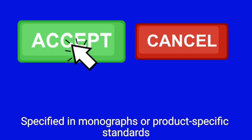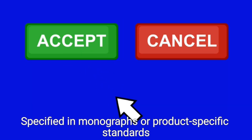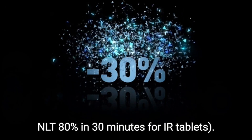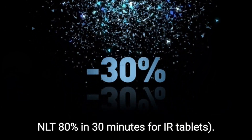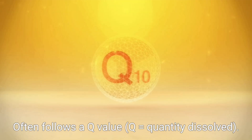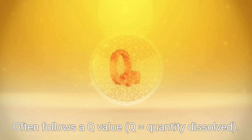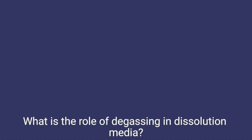Acceptance criteria are specified in monographs or product-specific standards — e.g., NLT 80% in 30 minutes for IR tablets. This often follows a Q value, where Q is the quantity dissolved. What is the role of degassing in dissolution media?